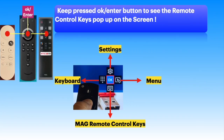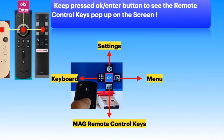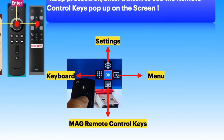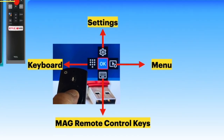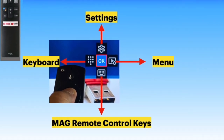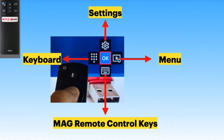When you keep the OK or enter button pressed on the remote, the remote control options appear on the screen as shown. We have four options: settings on the top, menu on the right side, Mac remote keys at the bottom, and keyboard on the left.